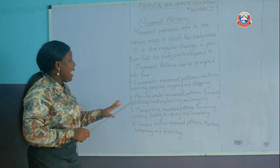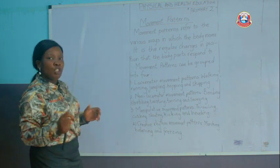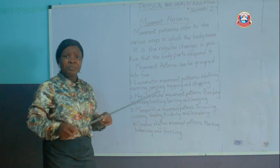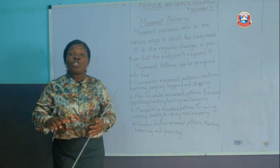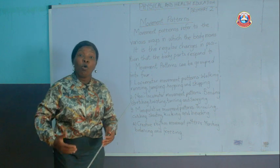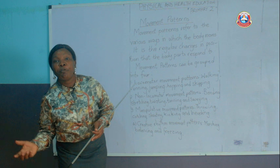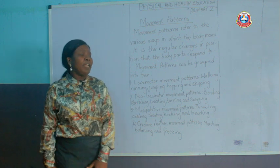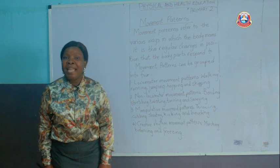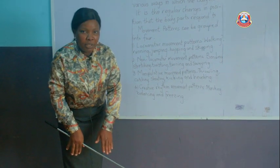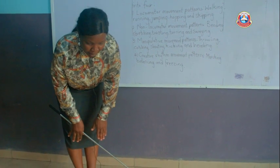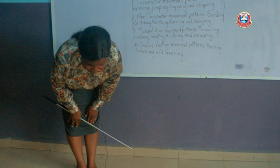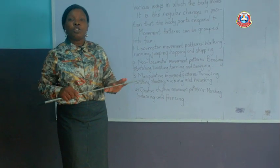The second group is the non-locomotive movement patterns. This movement pattern is done at a spot — you don't move your whole body; rather, you move parts of your body. Let's stand up everybody and do something called bending. Let's try to touch our knee. We are bending — this is an example under non-locomotive movement patterns.